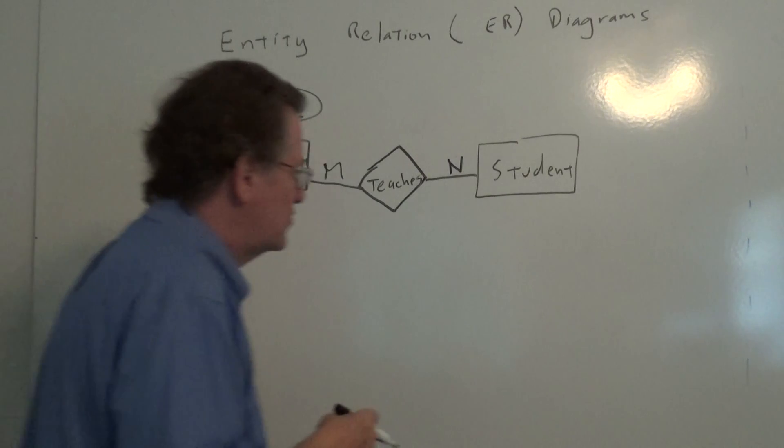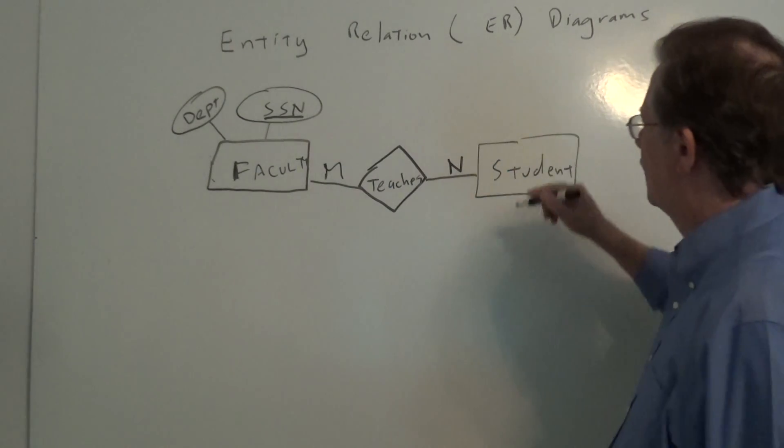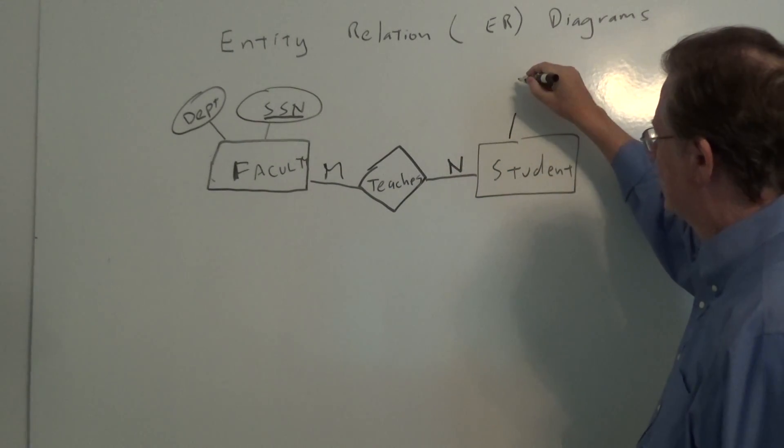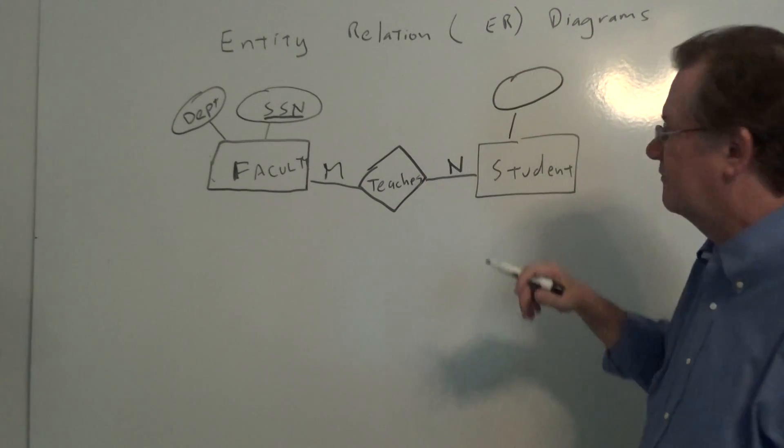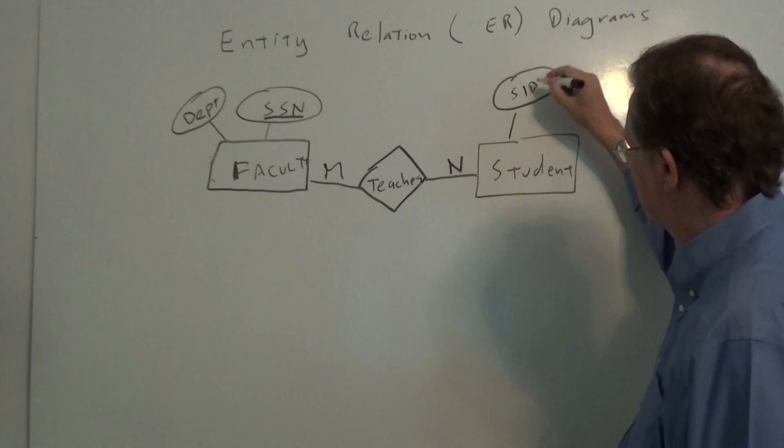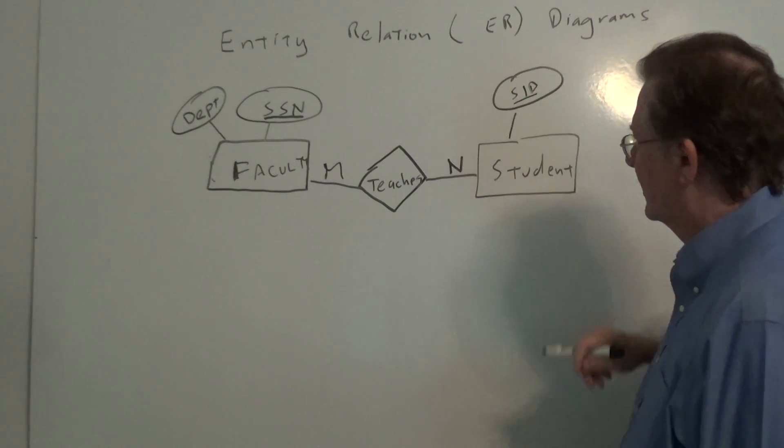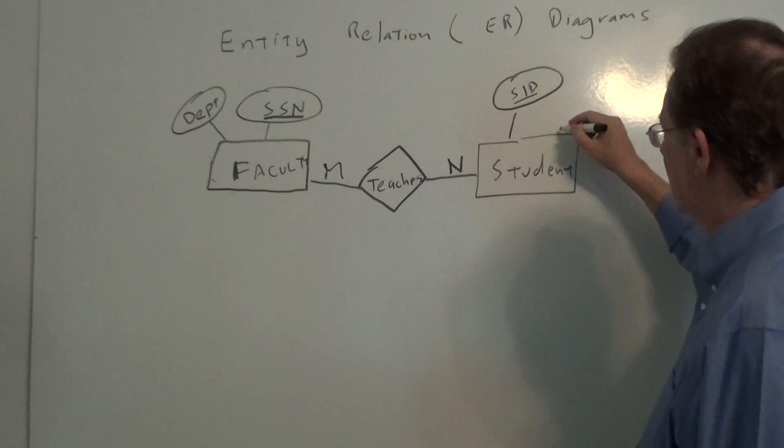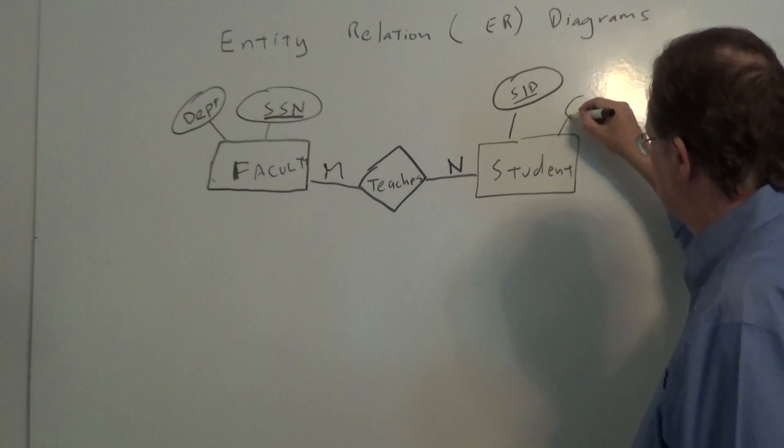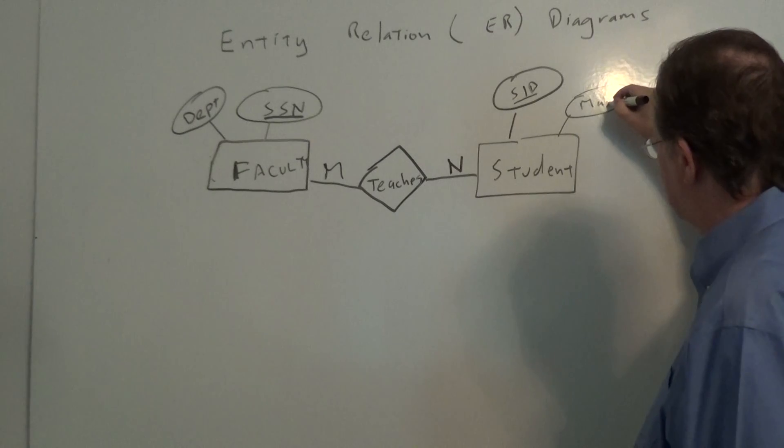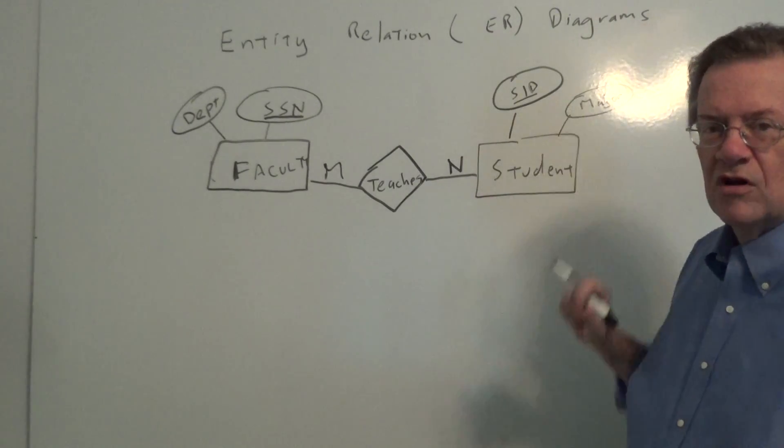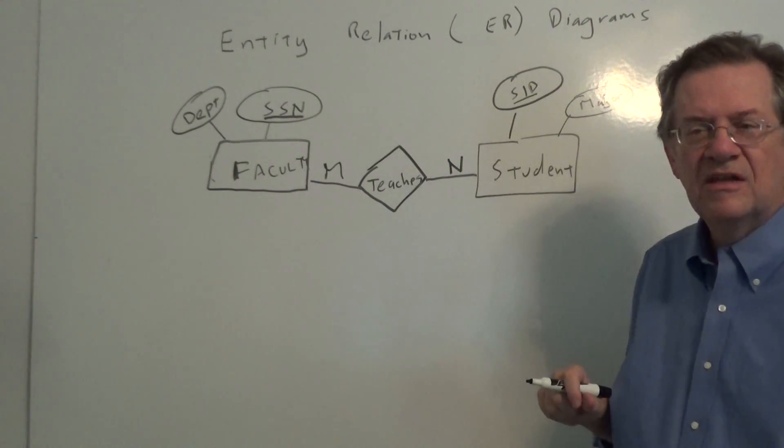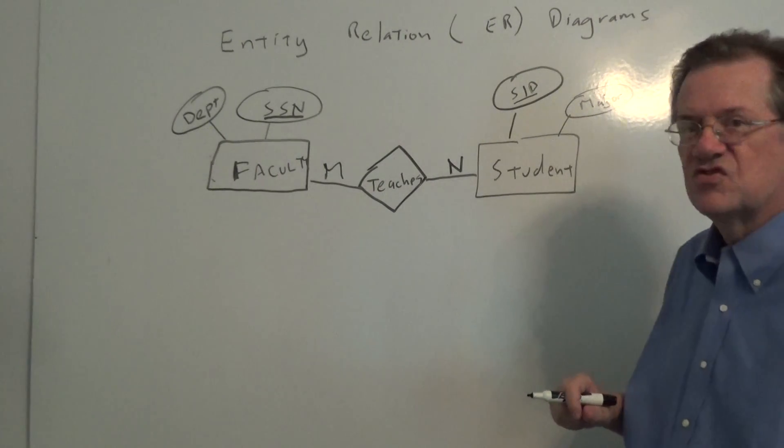Let's go over to student here. For student, instead of social security number, we might have the student ID. And we'll underline that. And let's just add one more attribute. For now, we'll say the student's major. Now we'll put more on here in this example in a bit, but that'll be enough to get us started.